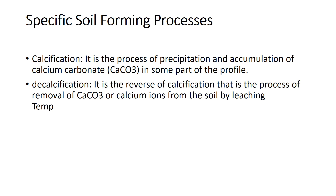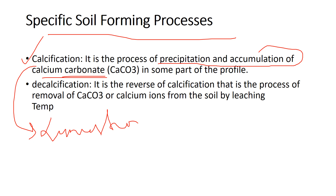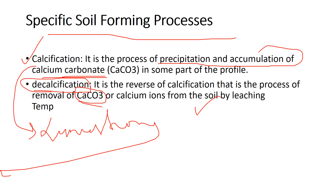There are also specific soil-forming processes. The most common is calcification — the formation, precipitation, and accumulation of calcium carbonate. Calcification occurs in many parts of the Earth and results in the formation of limestone rock. The reversal of calcification is decalcification, where calcium carbonate or calcium ions are leached from the soil by high temperature and rainfall.